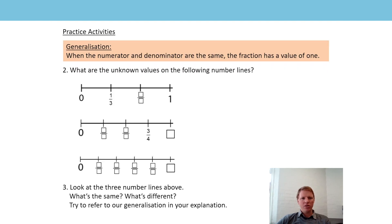In the second question, you were also asked to use that generalisation to help you, and we need to try and work out the unknown values on the number line. So let's think about what we know and what we don't know: 0, 1 third, 1. The number line goes from 0 to 1, it's been split into three equal parts, which is why the first one is 1 third, then another 1 third, so that'll be 2 thirds - so we need to put in 2 thirds.